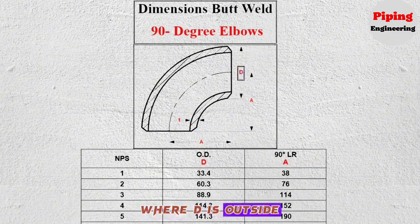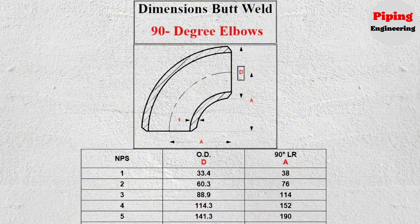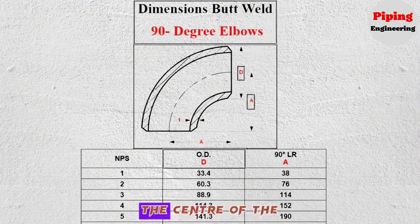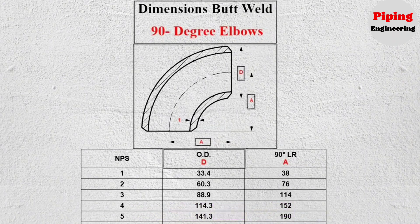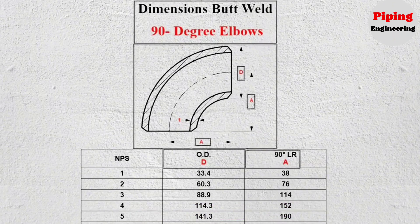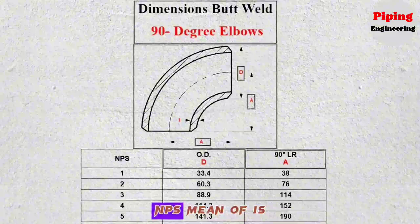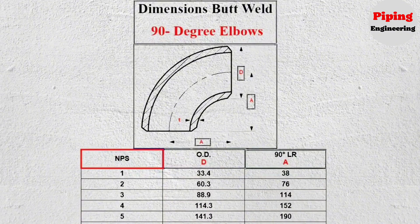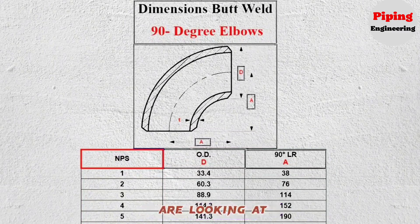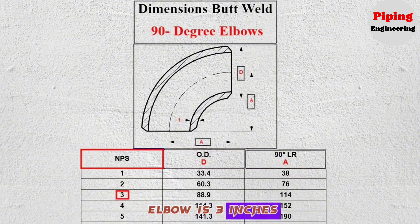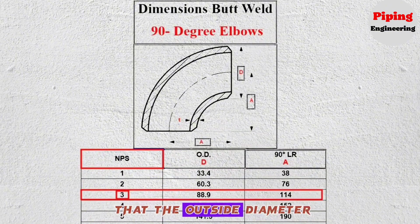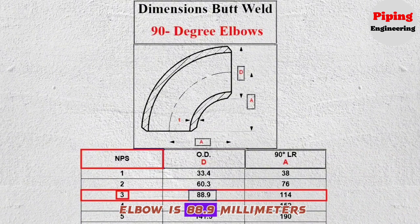Where D is outside diameter of elbow. Here A is the distance from the center of the long radius elbow to the end. NPS means nominal pipe size. In the example we are looking at, the size of the elbow is 3 inches. By looking at this chart, we can easily see that the outside diameter of the 3-inch elbow is 88.9 millimeters and the length is 114 millimeters.